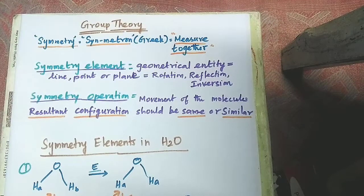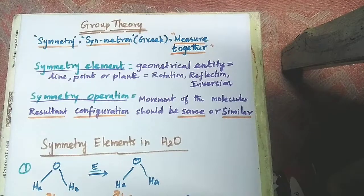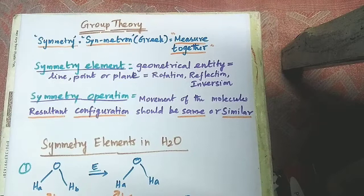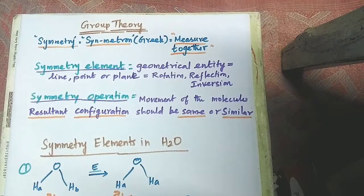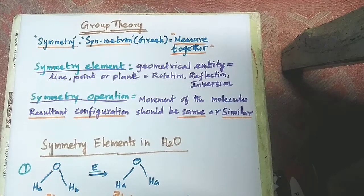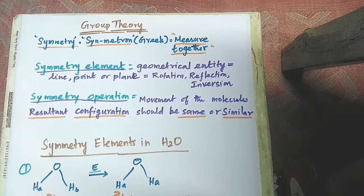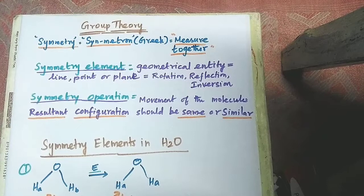What is a symmetry element? A symmetry element is a geometrical entity — it is a line, a point, or a plane — with which operations like rotation, reflection, and inversion can be done. So we do operations with geometrical entities which are line, point, or plane.